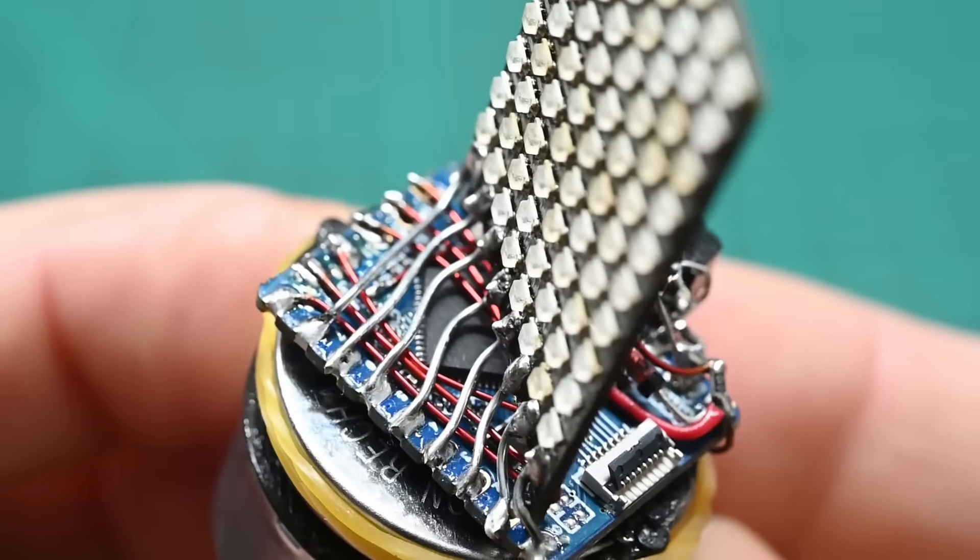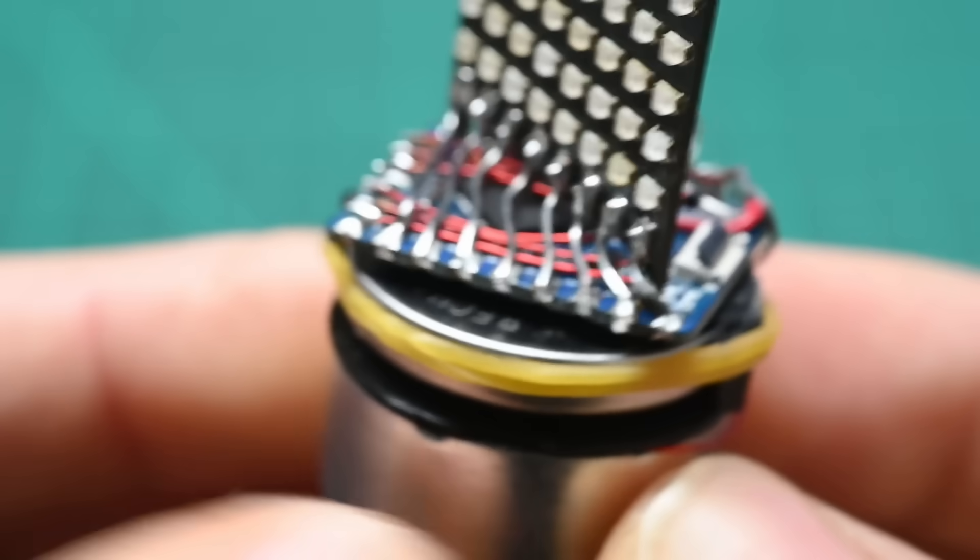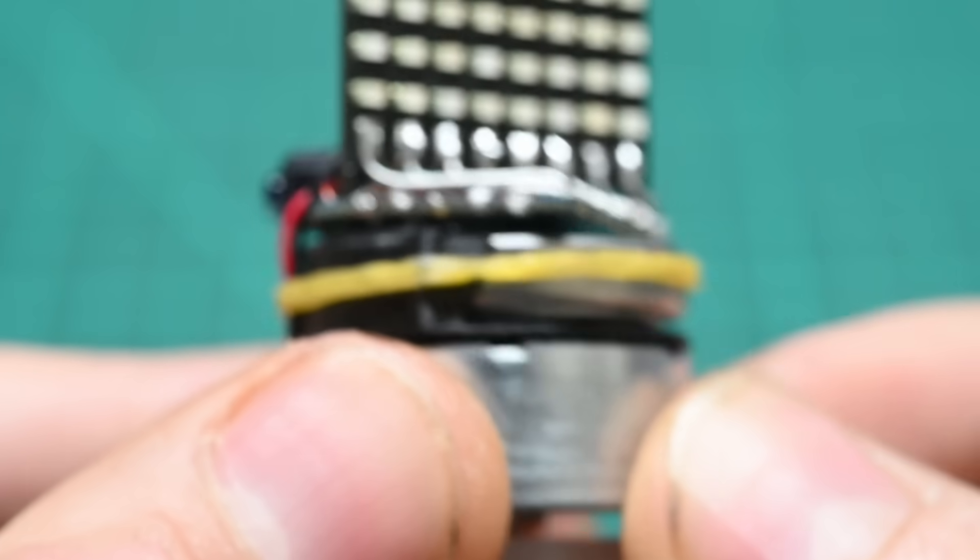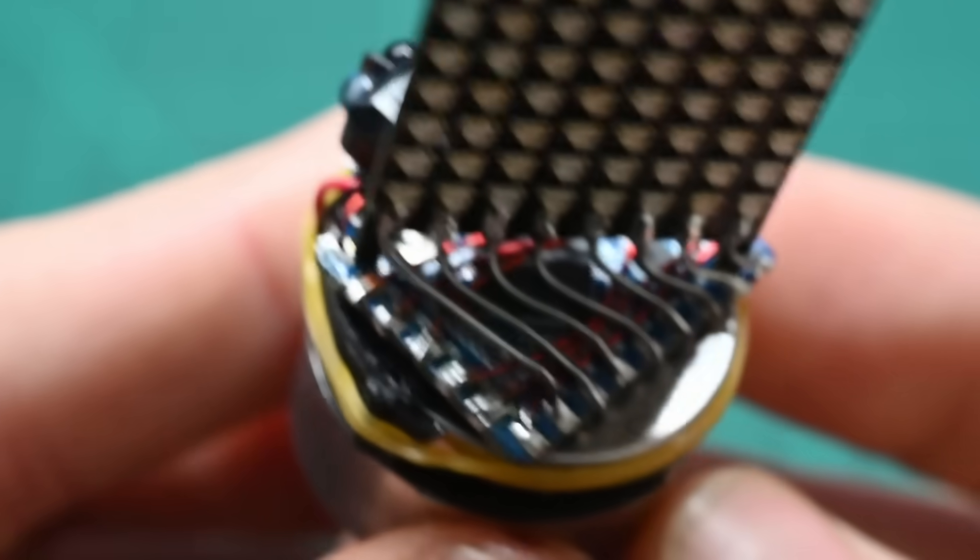For the next version I'll put all of the electronics on a circuit board and fix the battery holder. You can see I've had to add a rubber band to stop it flying out while the thing is spinning.